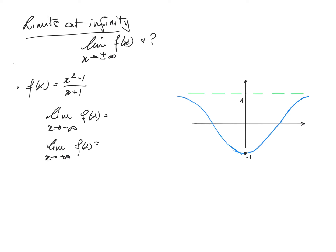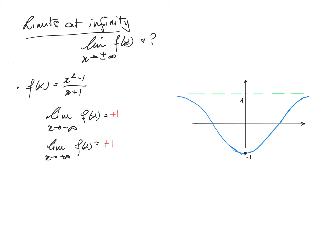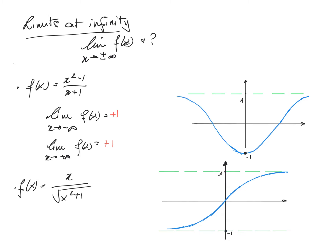When we take a look at the function, we see that the limit of the function for x going to minus infinity, as well as the limit for x going to plus infinity, goes to 1. We can do something similar for the function f of x equal to x divided by the root of x squared plus 1. If we plot this function, we see that the limit for x going to minus infinity will move on to minus 1, whereas the limit for x going to plus infinity goes to plus 1.